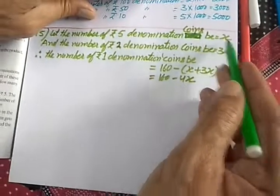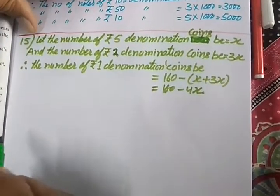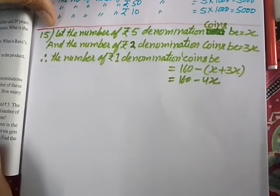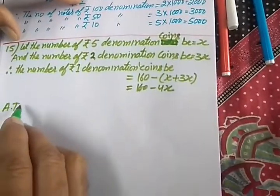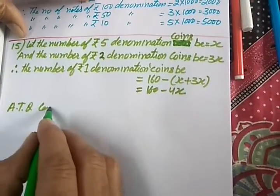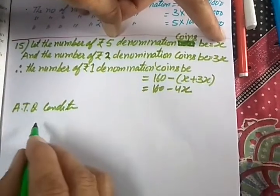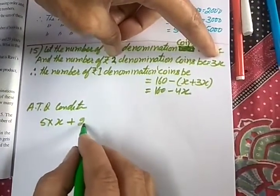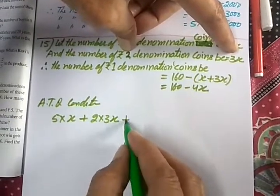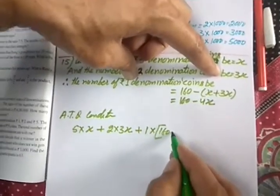Now let's calculate their values. You will multiply the number of each type of coin by its denomination value. Their total value will come out to be ₹300, as given. So according to the question's condition, their total value: first is 5 into x, plus 2 into 3x, plus 1 into (160 minus 4x) should give you ₹300.